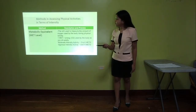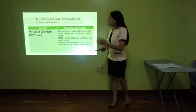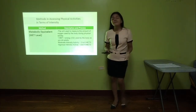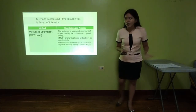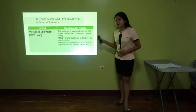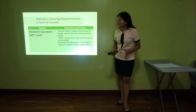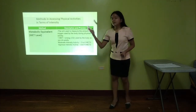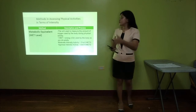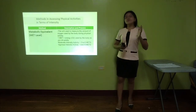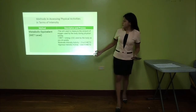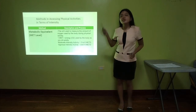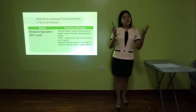Another method is metabolic equivalent, or MET. This is the unit used to measure the amount of oxygen used by the body during physical activity. This can be researched on Google. 1 MET equals the energy or oxygen used by the body as you sit quietly. If a specific activity receives 3 to 6 METs, that's moderate intensity activity. If the activity receives over 6 METs, it's vigorous intensity. You can research the equivalent MET of each activity on the internet or in books.